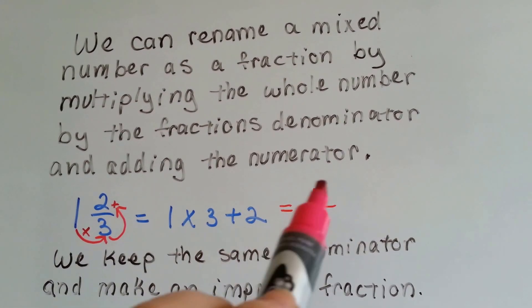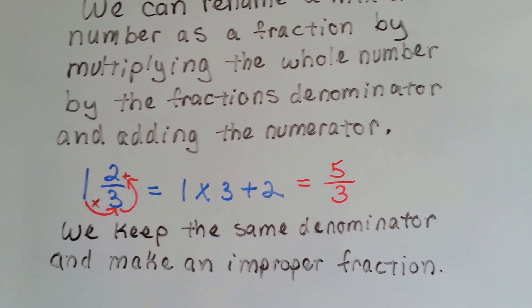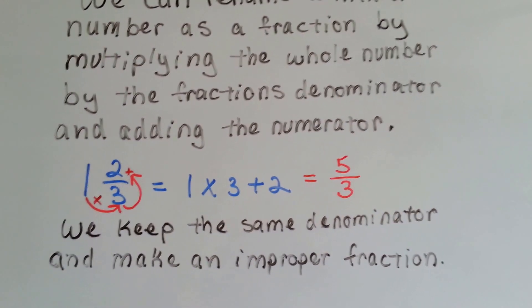See, 1 times 3 plus 2, we put it over the thirds. We keep the same denominator and make an improper fraction. Do you remember how to do that?